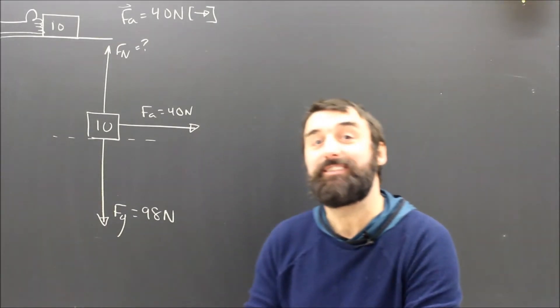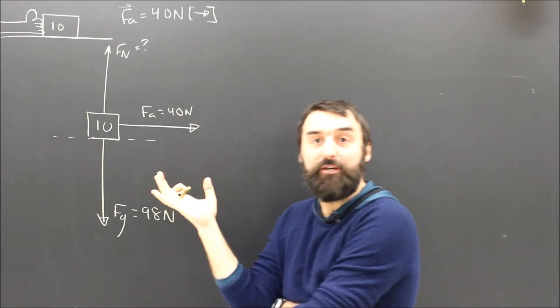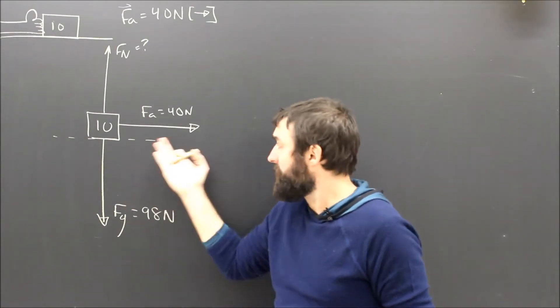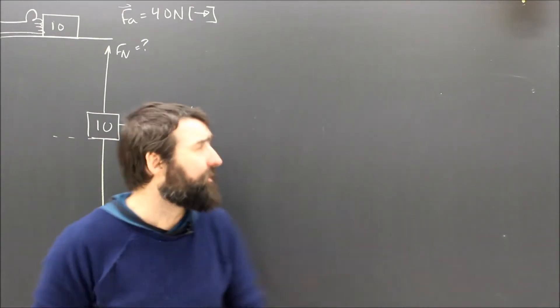Hopefully you understand Newton's second law. There has to be friction because if there wasn't, this thing would be accelerating at 4 meters per second squared, right? 40 over 10, easy. There is no acceleration. The acceleration is zero.